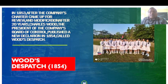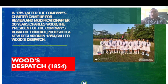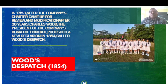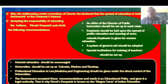Next, Wood's Dispatch of 1854. Each education commission has its own noteworthy accomplishment in Indian education. In 1853, after the company's charter came up for renewal after 20 years, Charles Wood, the president of the company's Board of Control, published a new declaration in 1854 called Wood's Dispatch. After deliberation, the review committee of the Charter Act declared that the spread of education in India was not detrimental to the company's interest.